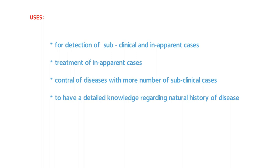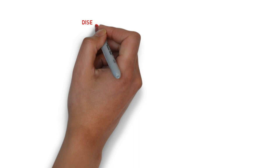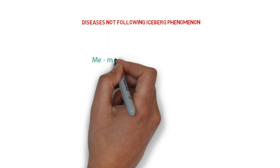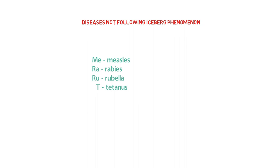Now there are some diseases which do not follow the iceberg phenomenon. Diseases which do not follow the iceberg phenomenon are measles, rabies, rubella and tetanus. We can remember it as 'Mera Ruth' — M-E for measles, R-A for rabies, R-U for rubella, and T for tetanus.